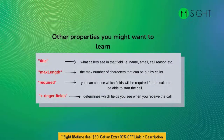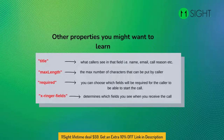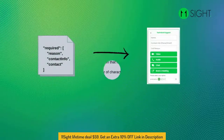Other sections in the form: First, the title — this is what callers see in that field: name, email, and call reason. You can change this according to your preferences. Second, max length — the maximum number of characters that can be entered by the caller. You can increase or decrease the number of characters.